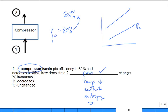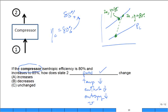With higher compressor efficiency (85% vs. 80%), enthalpy at state 2 actual decreases, entropy decreases — we move from a point further right to a point closer to 2S on the high-pressure line — and specific volume decreases as well since temperature drops at the same pressure. These conceptual questions help reinforce the T-S diagram intuition for how isentropic efficiency changes affect cycle states.